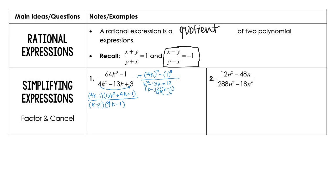After we've done our factoring, then and only then can we come back and do our canceling. Be very careful — you're canceling all of the parentheses with all of the other parentheses. So the final answer, after factoring and canceling, the numerator is going to be 16k squared plus 4k plus 1, all over k minus 3.